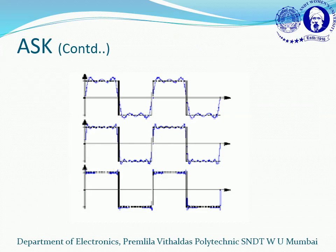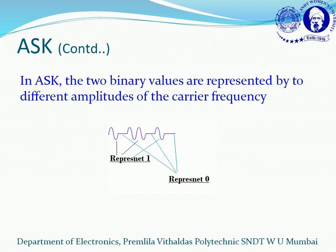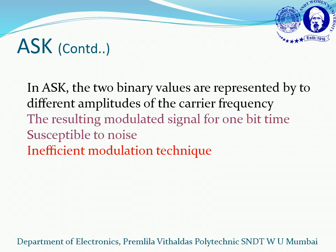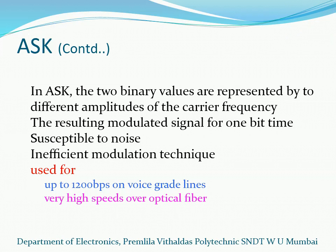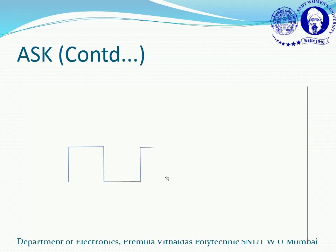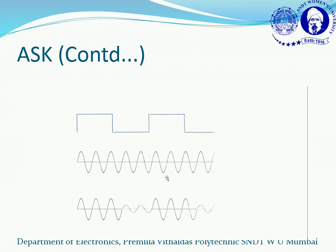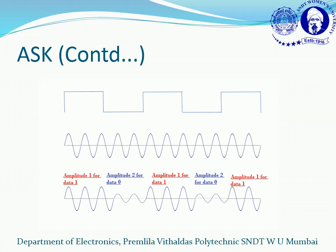The amplitude is highly susceptible to noise and gets easily distorted. In ASK, two binary amplitude values are used to represent 0 and 1, making the modulated signal for one bit time susceptible to noise. It is considered an inefficient modulation technique, used for voice-grade lines up to 1200 bits per second, and also used at very high speeds over optical fiber. In the diagram, the input is digital, the carrier is analog, and two amplitudes represent data 0 and data 1.